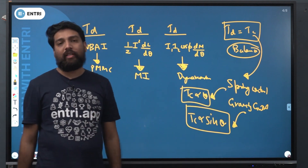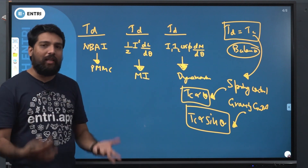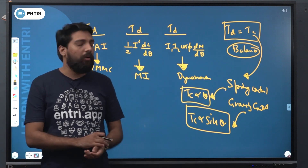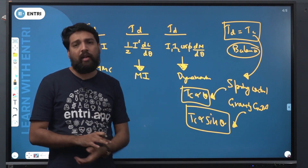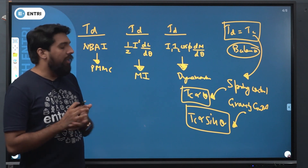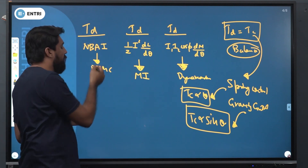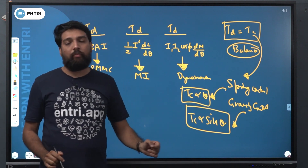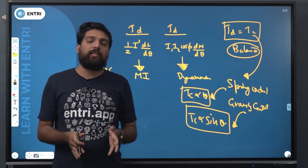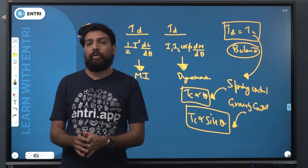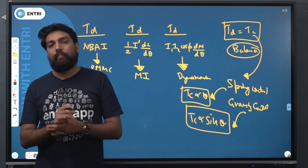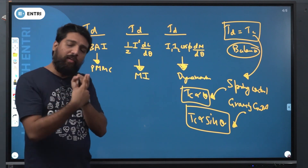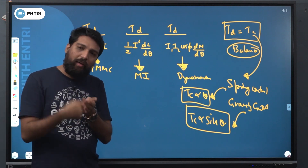This results in a non-uniform deflection, which comes out of gravity control. Gravity control instruments are important to use with vertical instruments. Spring controls can be used in any direction, while gravity controls are also used in vertical instruments. Deflecting torque can be produced using magnetic, electro-dynamic, induction effect, chemical effect, or heating effect.